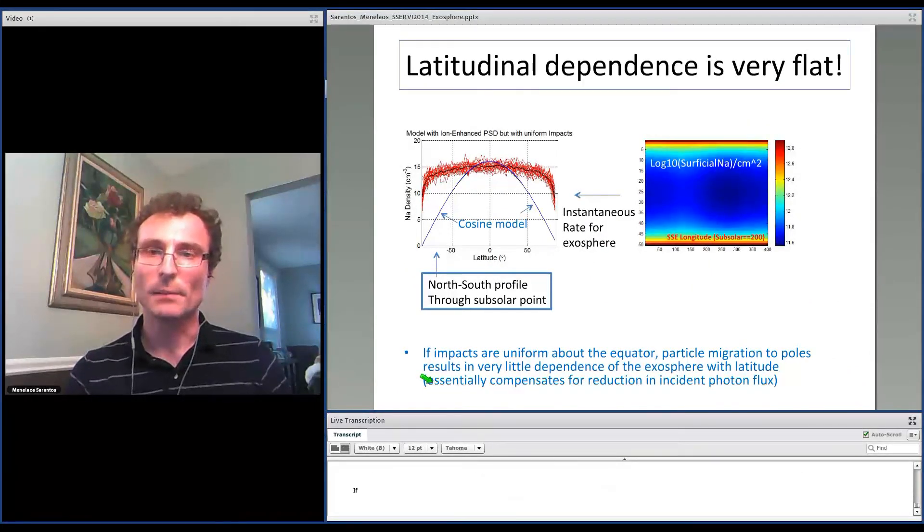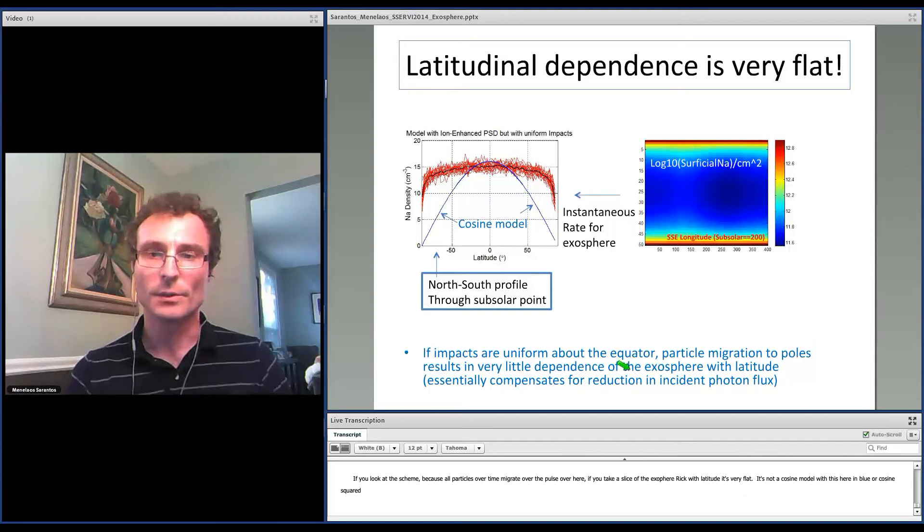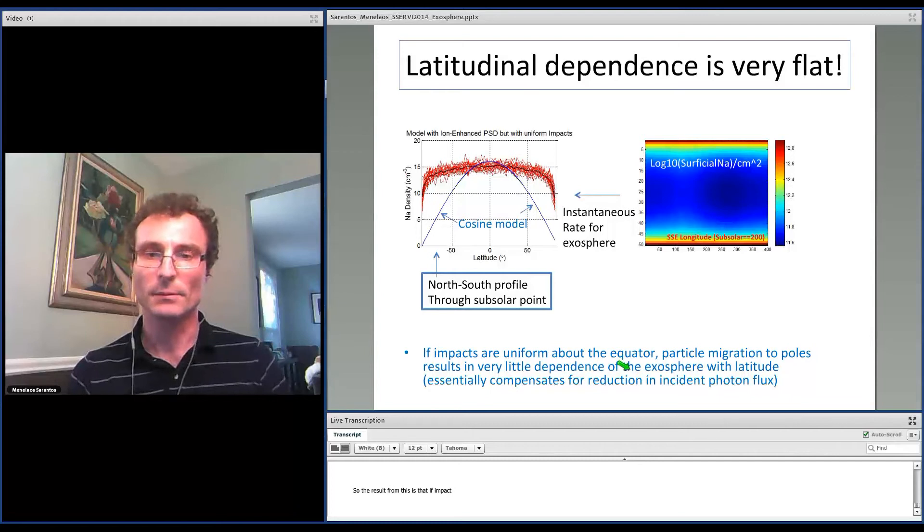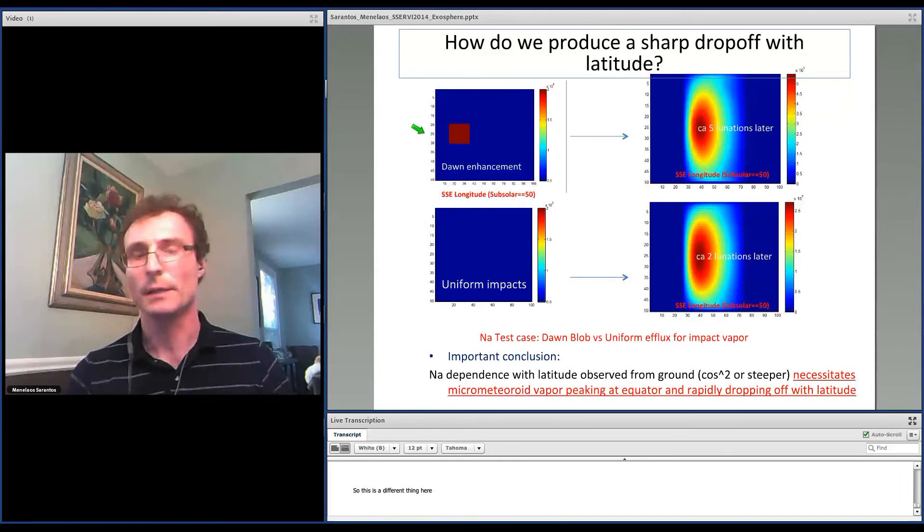If you look at the scheme, because all particles over time migrate to the poles, if you take a slice of the exospheric abundances with latitude, it's very flat. It's not a cosine model which is shown here in blue, or a cosine squared that we observe from the ground. So the result from this is that if the impacts are uniform about the equator, because of particle migration, you essentially do not reproduce the observed dependence with latitude as seen from the ground.